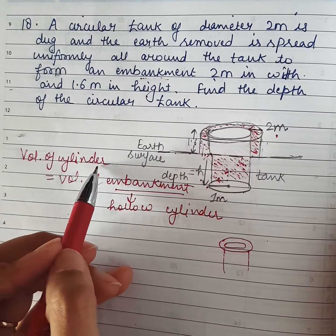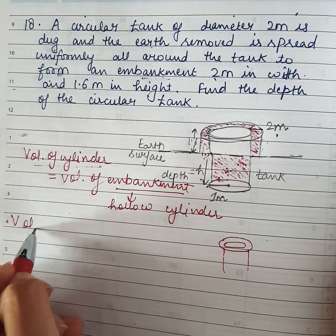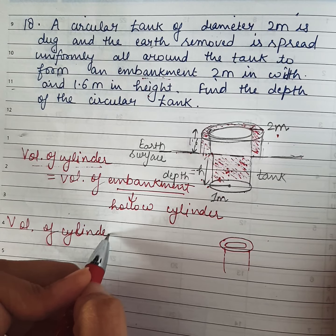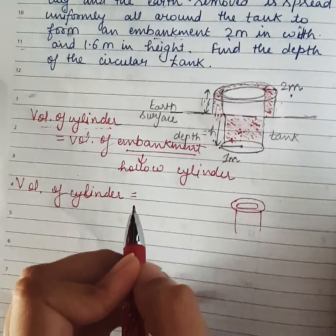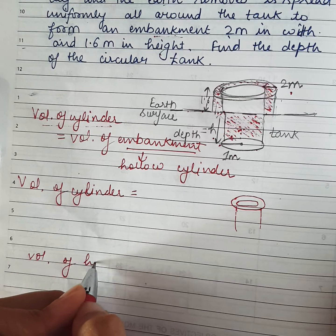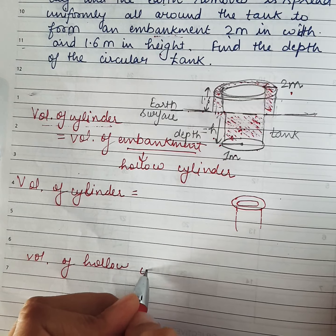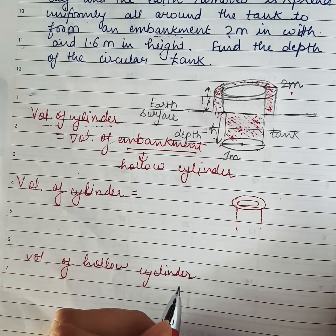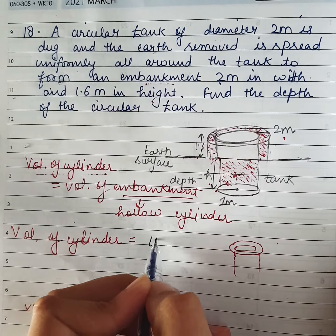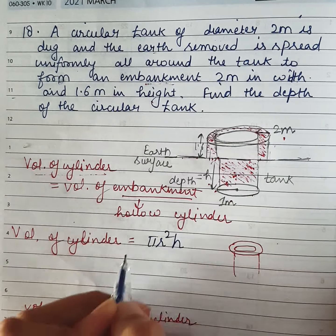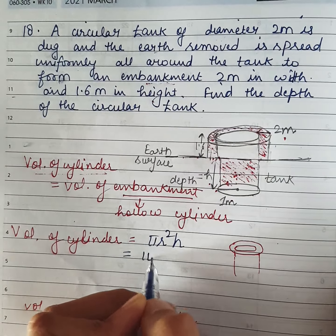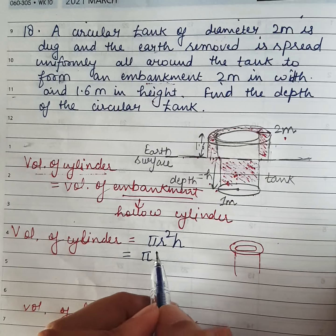So first, my target: we will find the volume of the cylinder which has been dug inside the earth. Then in the next step, we will find the volume of the embankment, which is the volume of a hollow cylinder. Then we will equate them. For the volume of the cylinder, the formula is pi r squared h. I will not solve pi — you will quickly know why.